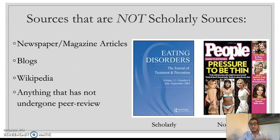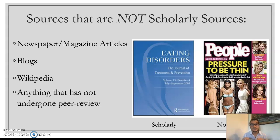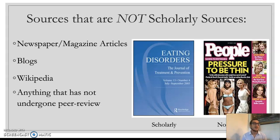What are some sources that are not scholarly sources? Newspaper and magazine articles do not qualify. Journalists will often report about scholarly research — you'll see headlines saying scientists have discovered something in newspapers, magazines, or online blogs — but that does not make it a scholarly source. That is a journalist reporting findings from a scholarly source. Wikipedia is not a scholarly source. Blogs are not scholarly sources. Anything that has not undergone peer review is not a scholarly source.